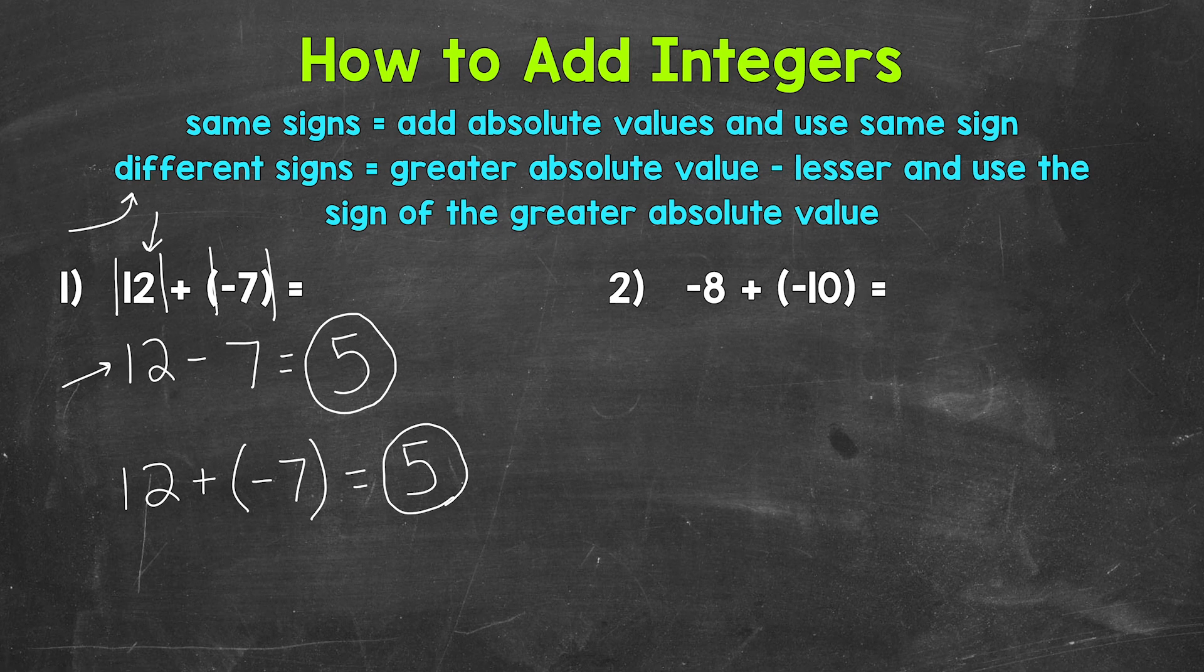Let's move on to number 2, where we have -8 + (-10). Here we have two negatives, so the same signs. So we are going to add the absolute values and use the same sign.